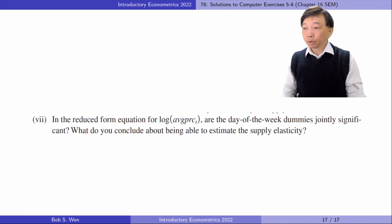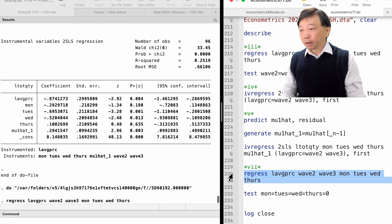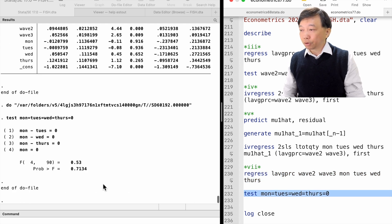In part 7, in the reduced form equation for log average price are the days of the week dummies jointly significant? What do you conclude about being able to estimate the supply elasticity? The reduced form equation for the price shows that the days of the week dummies are not jointly significant with a low F statistic of 0.53. They fail to satisfy the instrument relevance requirement. They are not valid instruments in the supply equation.